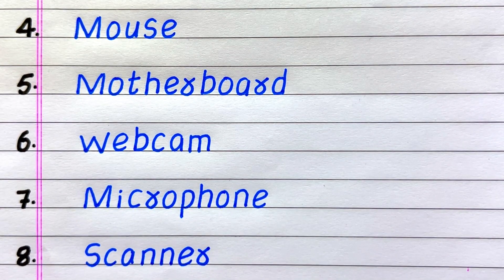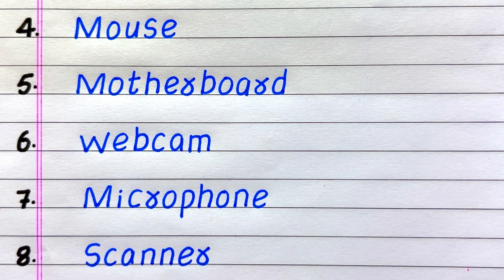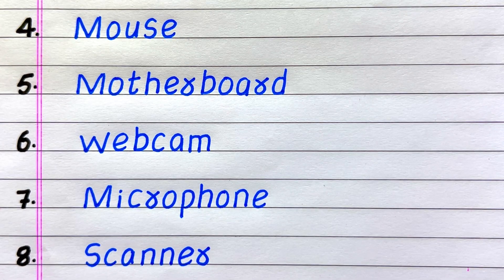The 4th basic part of a computer is Mouse. 5th, Motherboard. 6th, Webcam. 7th, Microphone. 8th, Scanner.